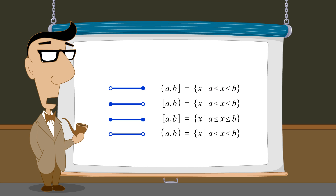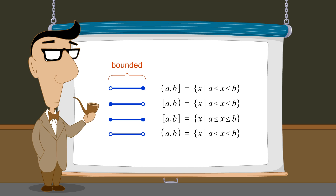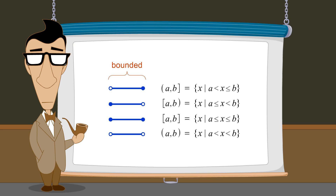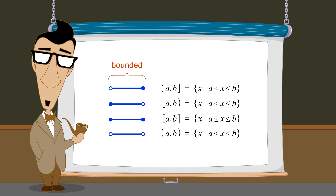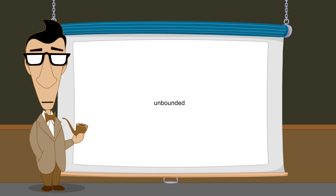We call all these intervals finite or bounded, since each interval has both an upper and lower bound, which limit the interval to a finite length on the number line. In the next lecture, we will explore the properties of unbounded intervals.